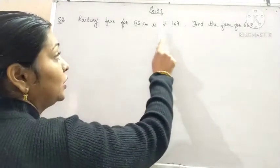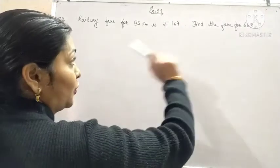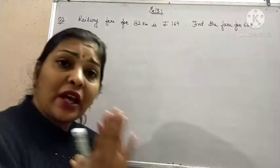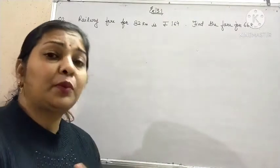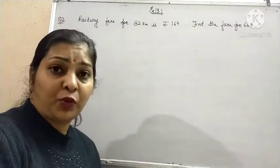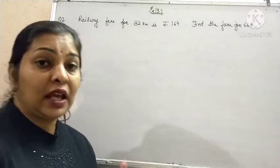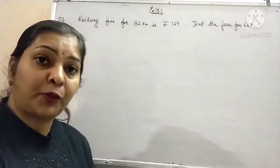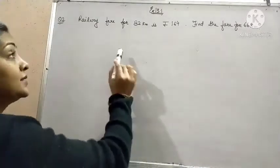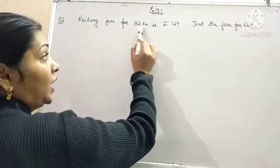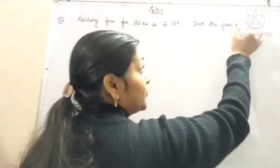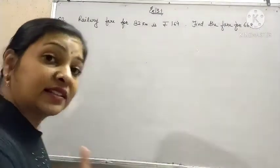Railway fare for 82 km is Rs. 164. Find the fare of 66 km. The very first step after reading the problem of direct and inverse proportion, you have to check whether the given problem is a direct proportion or inverse proportion. See here the fare for 82 km is Rs. 164 and you are supposed to find the fare for 66 km.